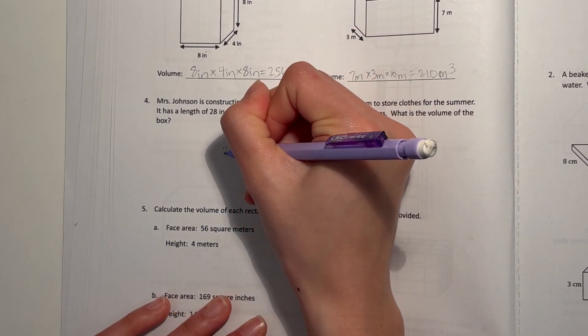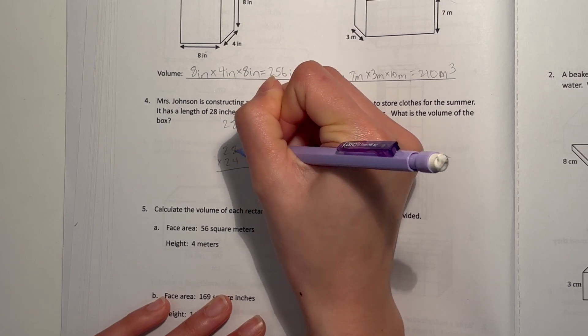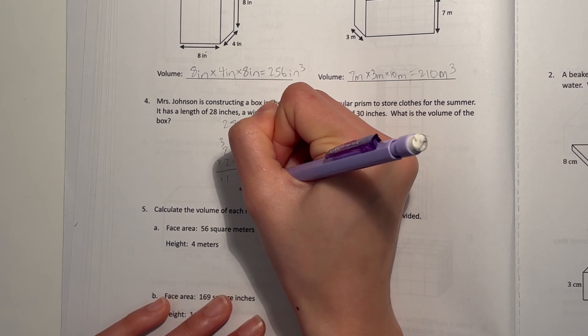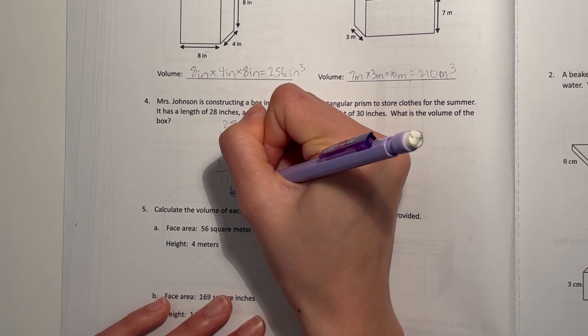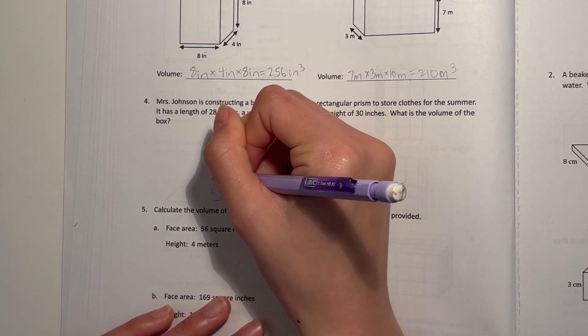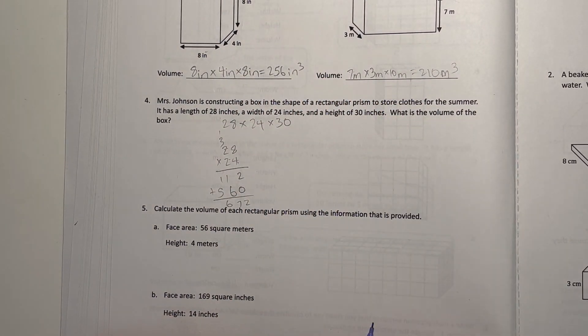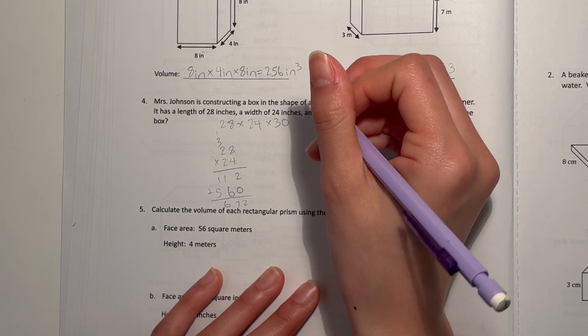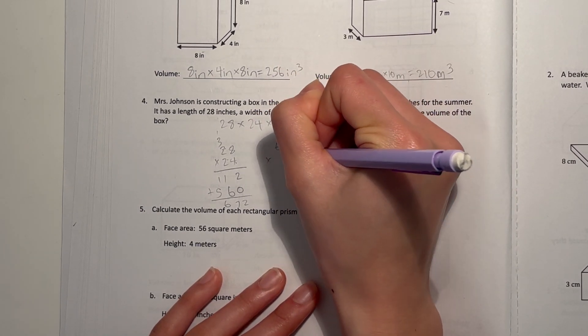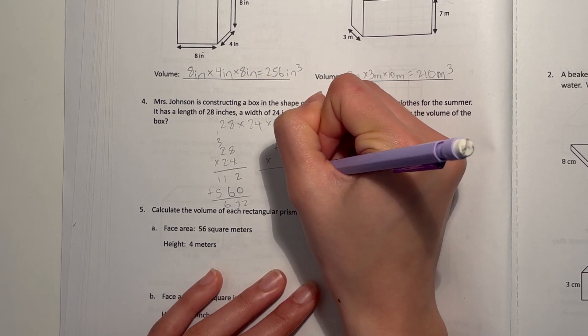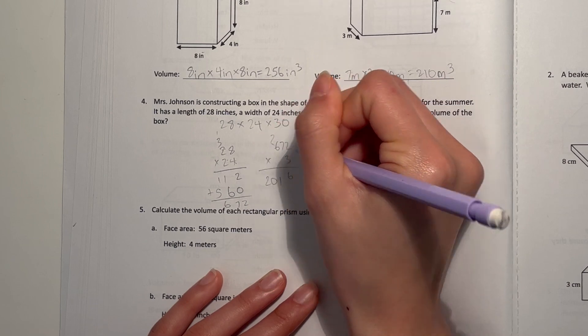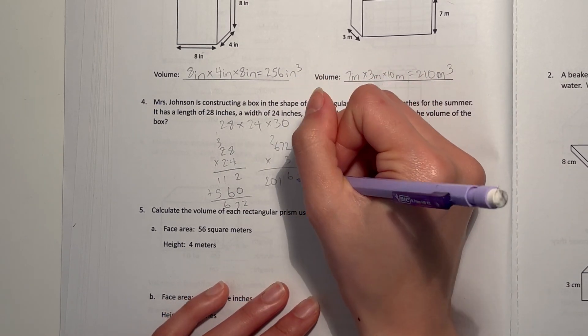First I'm going to do 28 times 24. That's 112, that's 16, so 672. Now 672 times 30, we can do 672 times 3 first—that's easier.